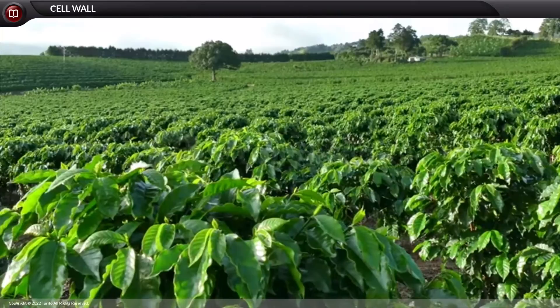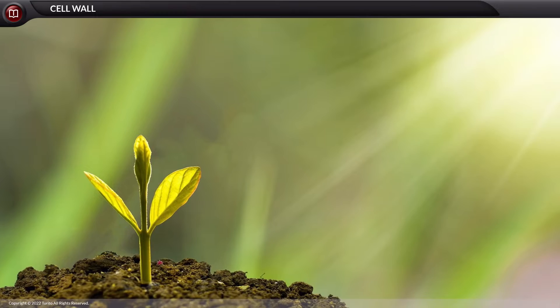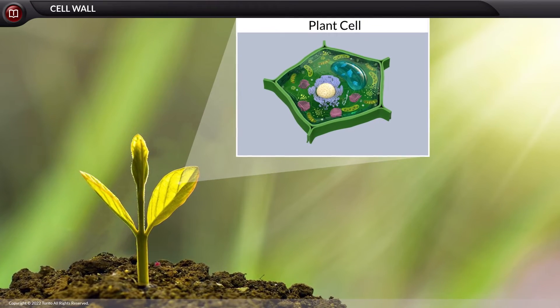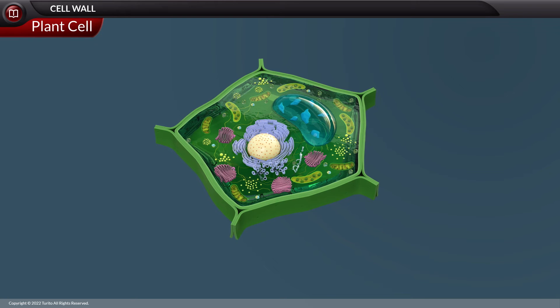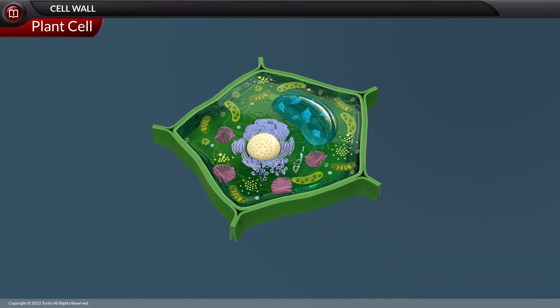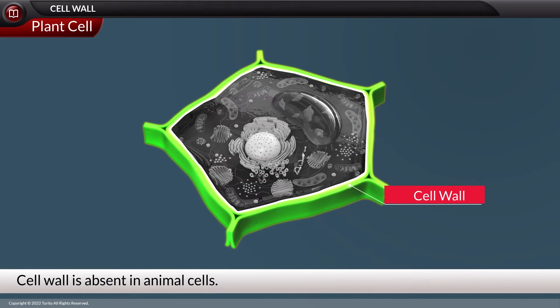What makes the plants strong and stand erect amidst all the environmental conditions? It is because of plant cells. The rigidity of the plant cell is due to the presence of a special layer external to the cell membrane, called the cell wall, which is absent in animal cells.